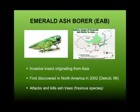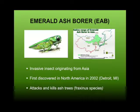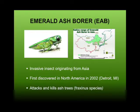Emerald ash borer is an invasive insect — it's not native to the United States. It came from Asia. It was first found here in 2002 in Detroit, Michigan. Emerald ash borer attacks and kills ash trees — anything in the Fraxinus species: green ash, white ash, blue ash, black ash. We get questions about mountain ash, but emerald ash borer does not attack it because it's not a true Fraxinus species.